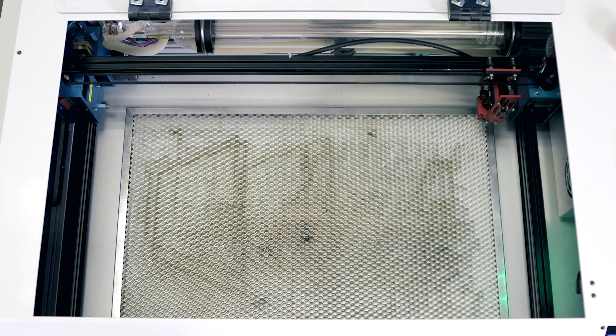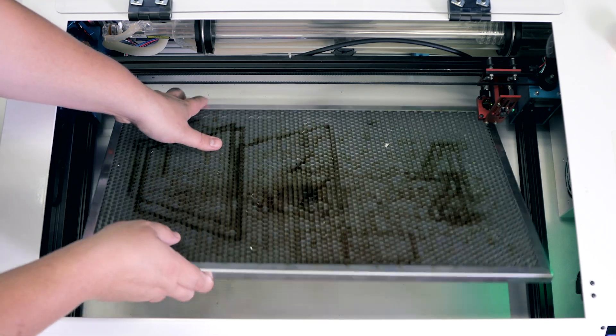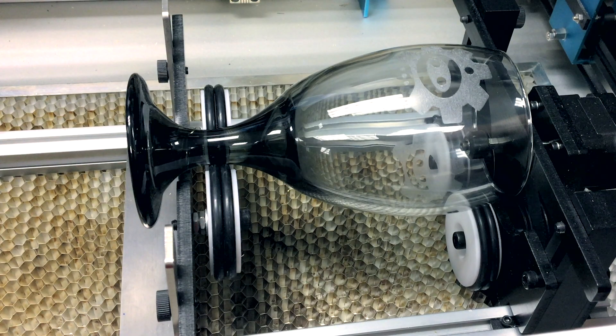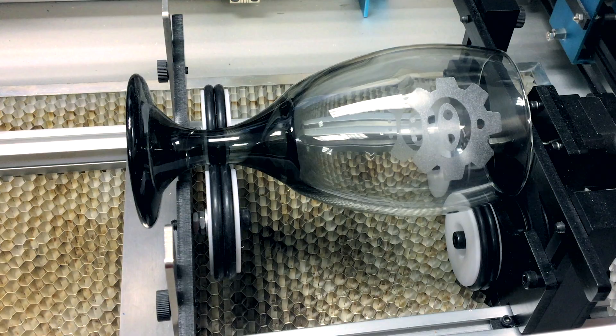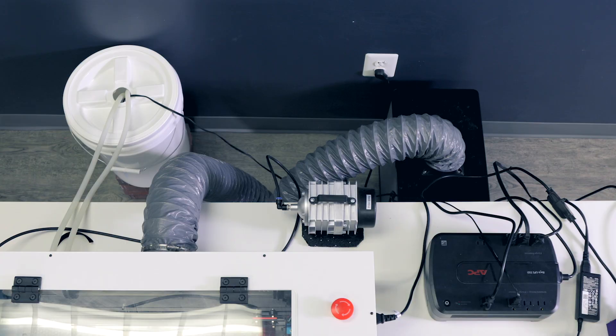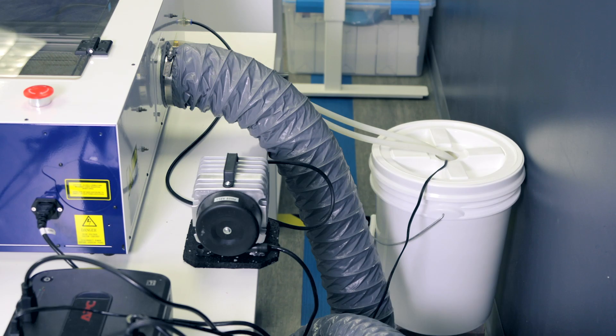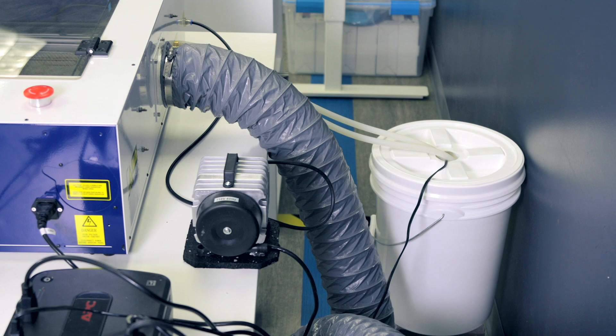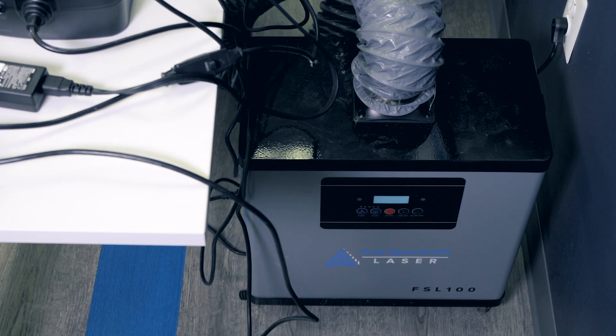Other features include a true 20 by 12 cutting area, a removable Z floor, a rotary attachment for engraving on glassware, an air compressor to blow smoke away from the cut, a water pump for a recirculating water cooling system, and an air filter to limit dust and smell in the laser.